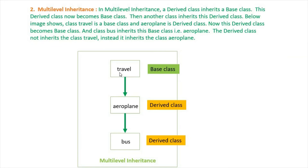In multi-level inheritance, there is one base class Travel. There is another class Aeroplane which is a derived class that inherits Travel base class. Then this class Aeroplane becomes a base class for derived class Bus, because class Bus inherits class Aeroplane instead of inheriting class Travel.